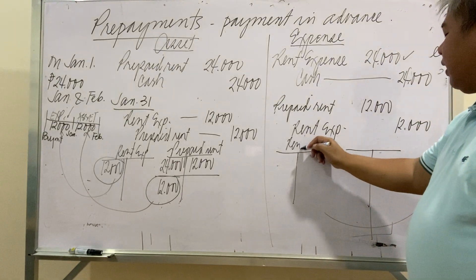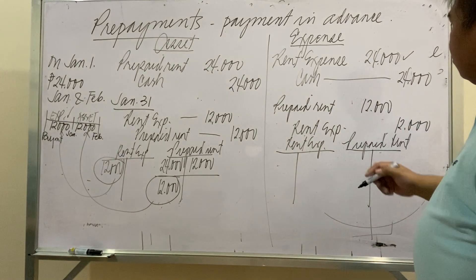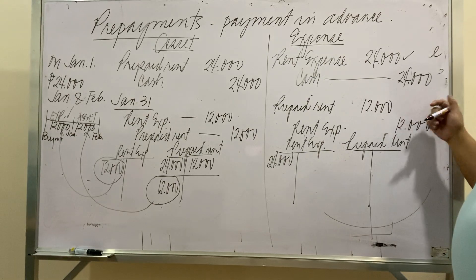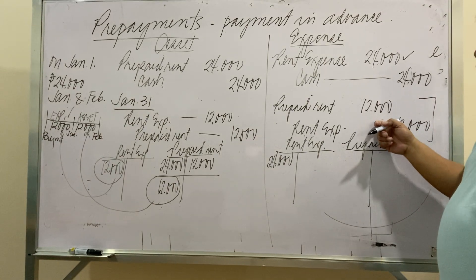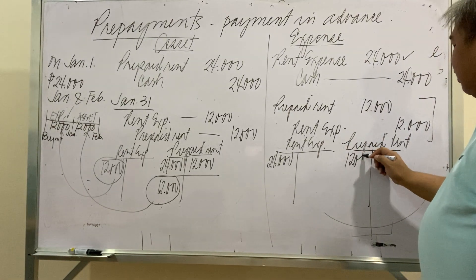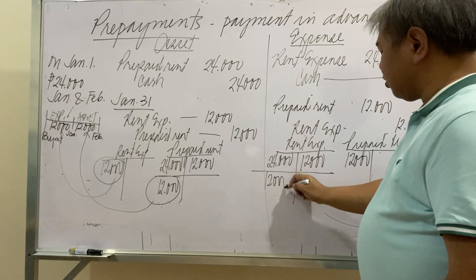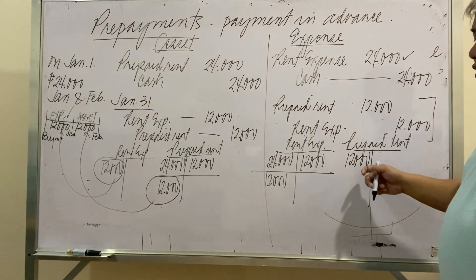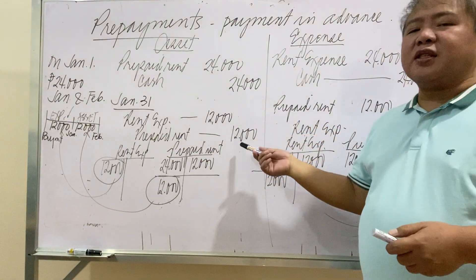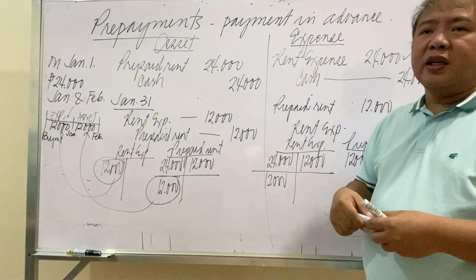Under the expense method T-account analysis: Rent Expense was debited 24,000 initially, then credited 12,000 via the adjusting entry, leaving a balance of 12,000. Prepaid Rent is debited 12,000. Both Rent Expense and Prepaid Rent end at 12,000 — the same result as the asset method.